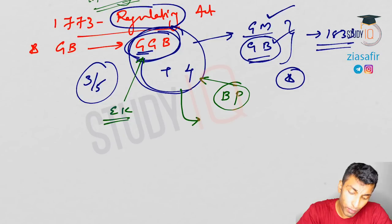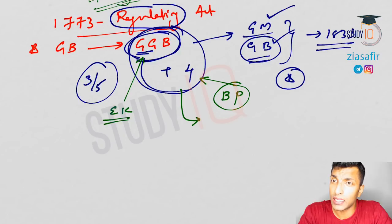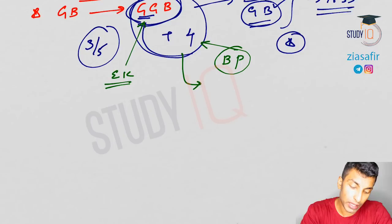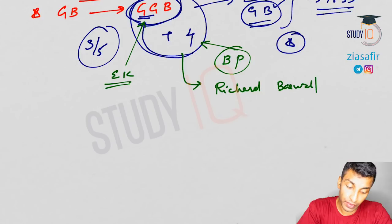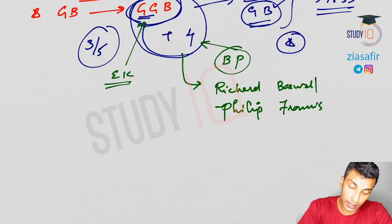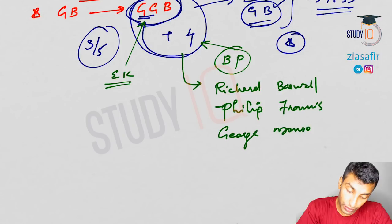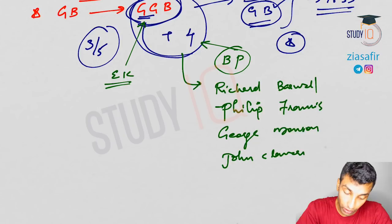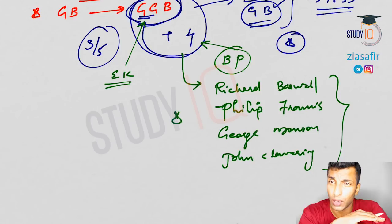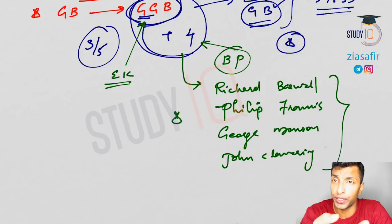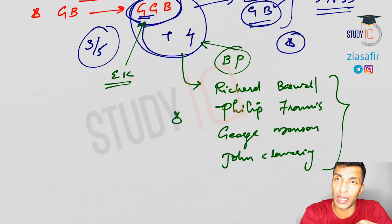The names of the four council members are important since they are the first. They are: Richard Barwell, Philip Francis, George Monson, and John Clavering. The number of council members would be changed in subsequent acts, so you don't need to memorize all later names — but these four are significant.